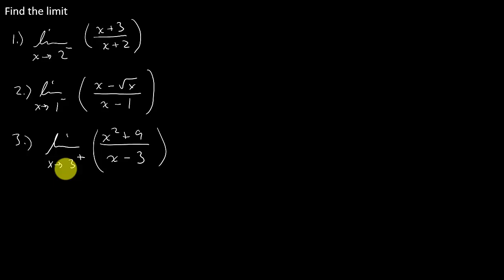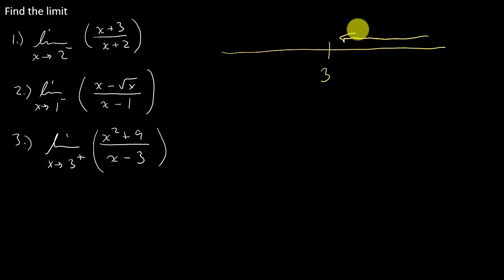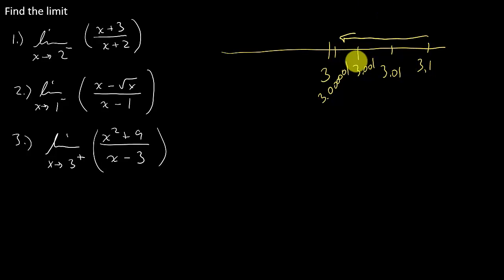I think the best way to look at this is let's just look at this on a number line. Here's 3, and I'm coming into 3 from the right-hand side. So I'm plugging in numbers like 3.1, 3.01, 3.001 — getting even closer, 3.000001 — just getting closer and closer to 3 from the right.